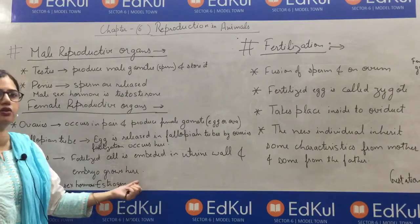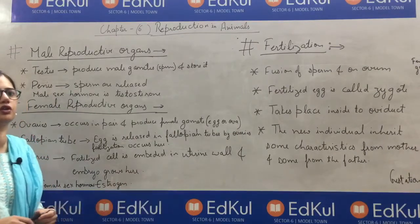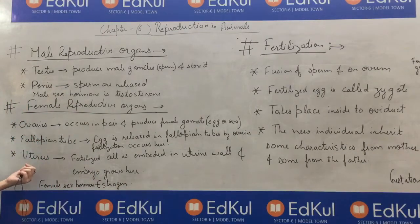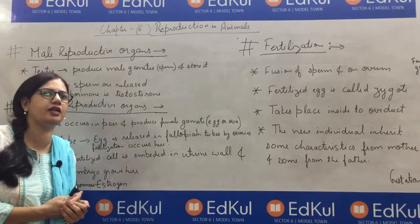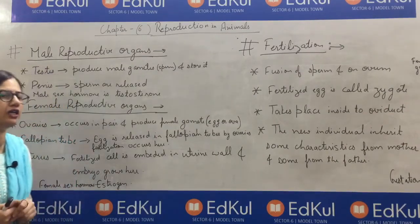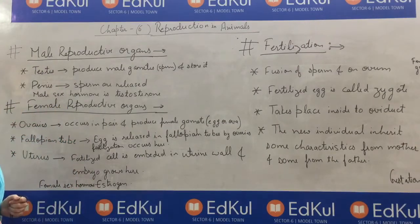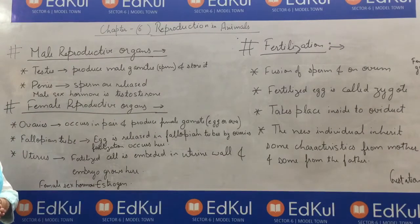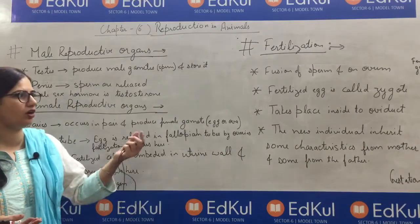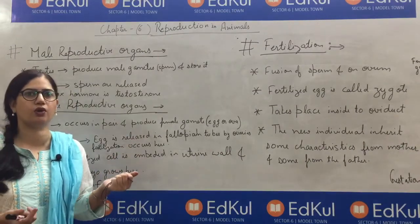The embryo grows inside the uterus. Inside the uterus, a new organ forms — that is the placenta. This placenta is a link between the uterus and the developing embryo. The zygote develops into an embryo.